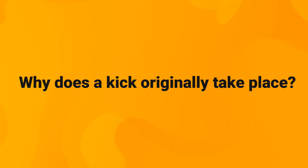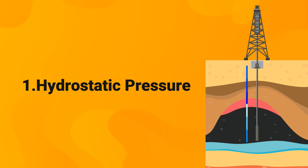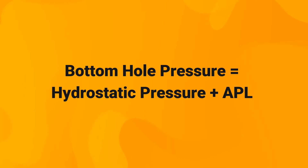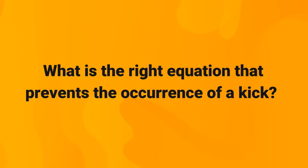But why does a kick originally take place? This is answered by analyzing the different pressures that exist downhole. There are three main types of pressure that control the occurrence of a kick during normal drilling operations. Number one: hydrostatic pressure — the pressure formed by the weight of the drilling fluid column, dependent on both drilling fluid weight and the height of the drilling fluid column. Number two: annular pressure losses, or APL — the pressure generated due to friction force between the drilling fluid and the annulus during pumping and circulation. The APL plus hydrostatic pressure are called bottom hole pressure. Number three: formation pressure, or pore pressure — the pressure of the formation fluid contained inside the pores of the formation. Now pause this video and take a moment to think: what is the right equation that prevents the occurrence of a kick?